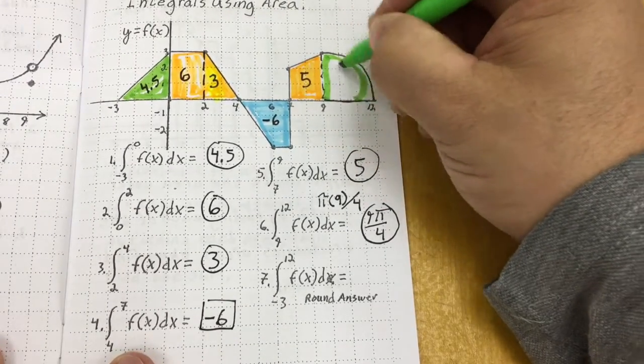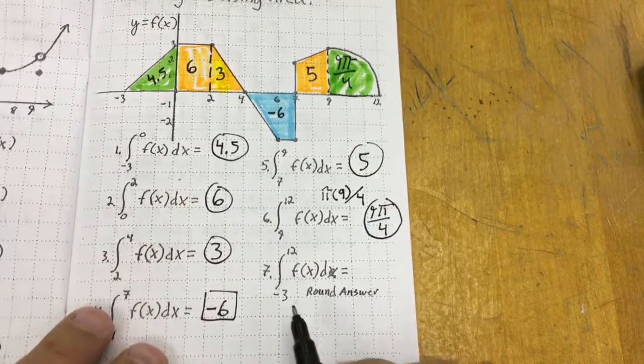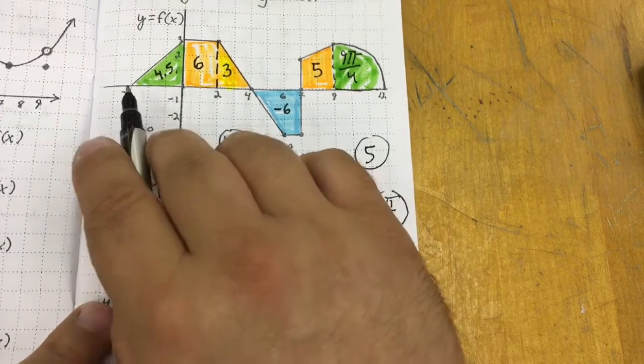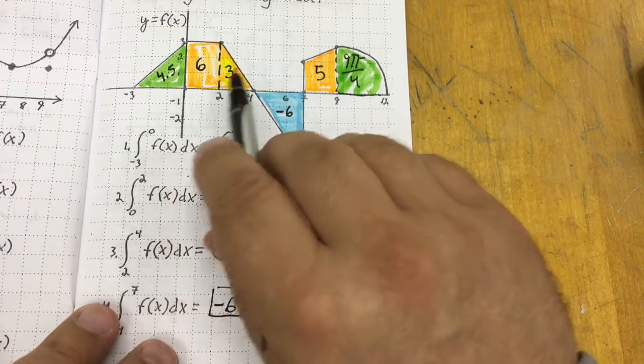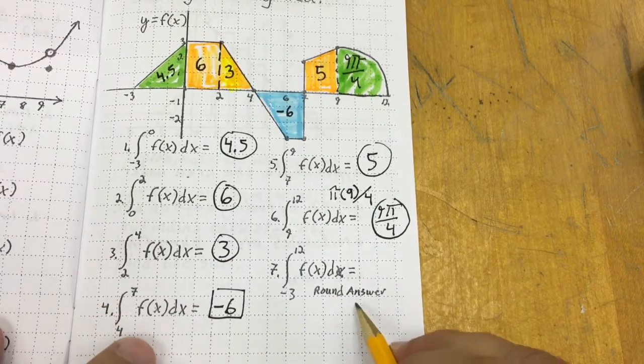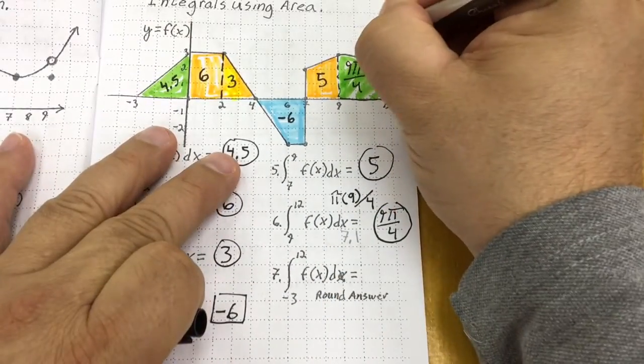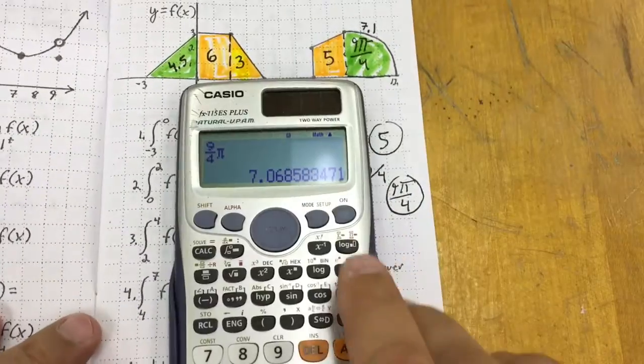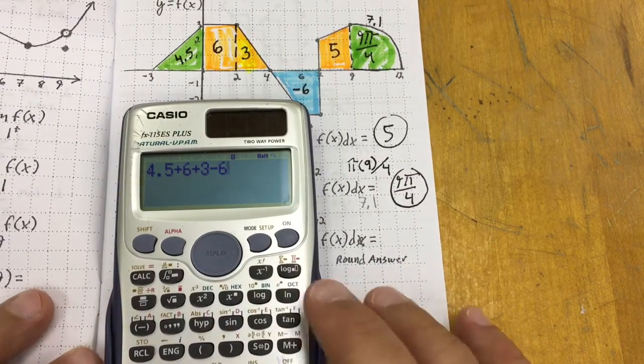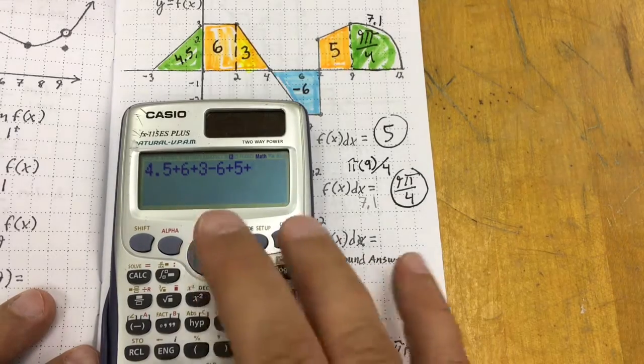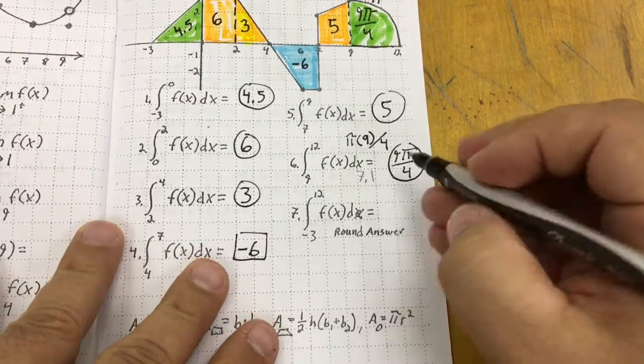For the last one, it wants me to find the area from negative 3 to 12, all the way from negative 3 over to 12. That's going to be the net area - in other words, I have to add up where they're positive and subtract where they're negative. So 9 pi over 4 I'm going to say was 7.1, and I'm going to add these up: 4.5 plus 6 plus 3 minus 6 (negative area) plus 5 plus 7.1, and that's going to give me 19.6 for my total net area.